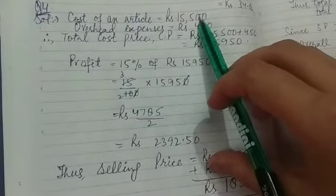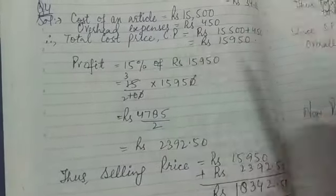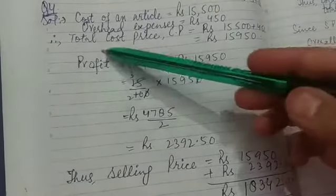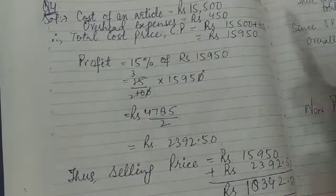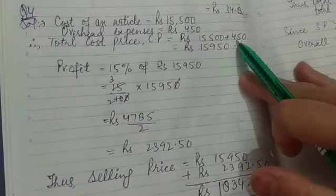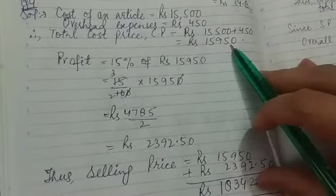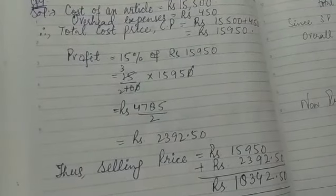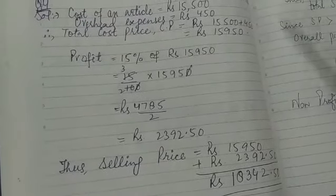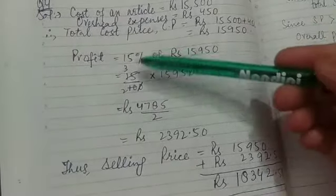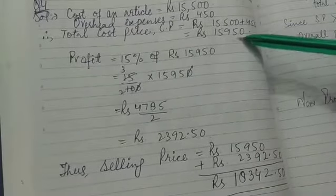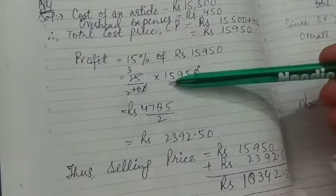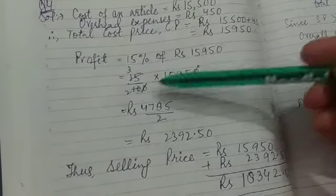The cost of the article is ₹15,500. The overhead expenses — that means extra expenses beyond the cost price — are ₹450. Therefore, total cost price will be ₹15,500 + ₹450 = ₹15,950. Now, the profit is 15%, and as I mentioned before, profit or loss is always calculated on the cost price. So the profit is 15% of ₹15,950.